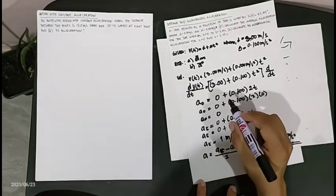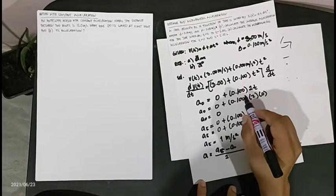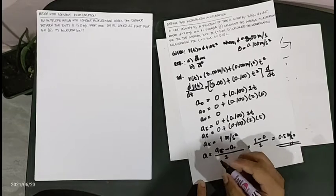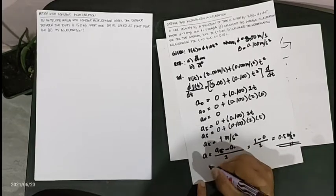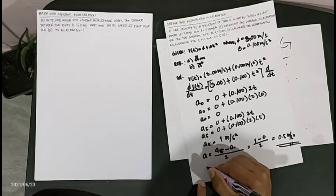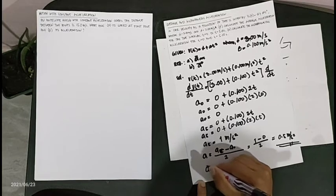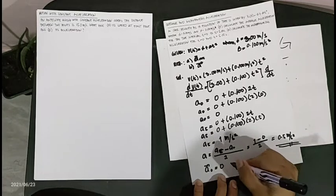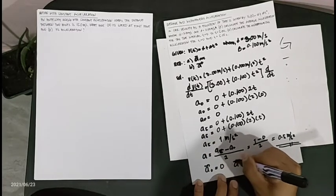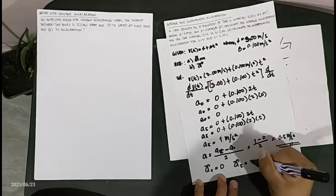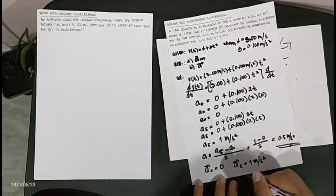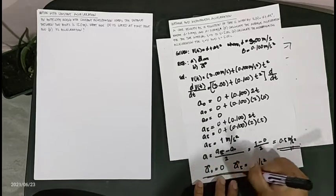The derivative of the function equation at a specific time gives us the instantaneous acceleration. The instantaneous acceleration at t equals 0 is 0, and the instantaneous acceleration at t equals 5 is 1 meter per second squared. This is our complete solution.